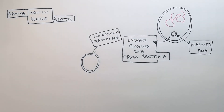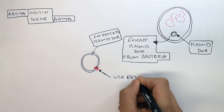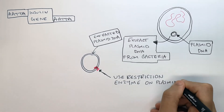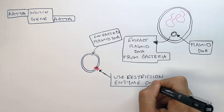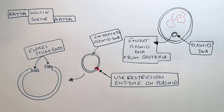We've now got the extracted plasmid DNA. We then use restriction enzymes on the plasmid as well — this does the same thing as before. It exposes sticky ends on the plasmid DNA, which are unpaired bases.